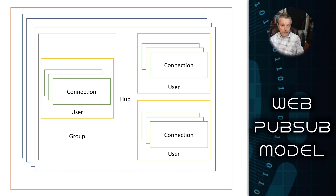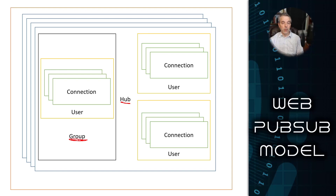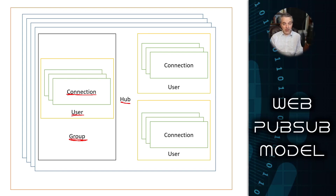The reason you'd want this object model is because it's a very powerful model for how you can send messages. You can send a message to a hub — meaning all users on the hub get the message on all their connections. You can send it to a group, so all users in the group with all their connections get it. You can send it to an individual user — all of that user's connections get the message — or to an individual connection itself. This allows broadcasts or very targeted messages, creating some interesting permutations and complex topologies with groups, users, and multiple connections.